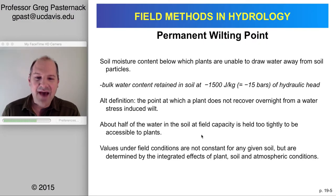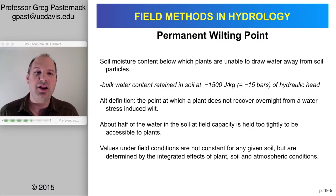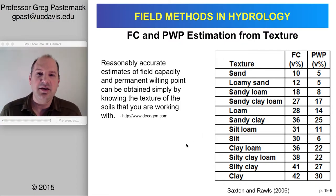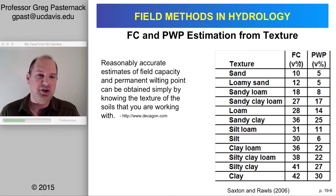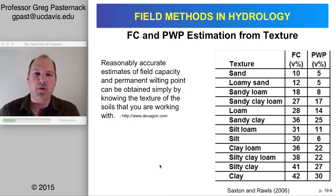About half of the water in the soil at field capacity is held too tightly to be accessible to plants. The permanent wilting point is not easily measured directly, since you'd need something that functions like a plant to compete against the soil. As a result, the permanent wilting point is often estimated based on texture — as is field capacity. Here are typical capacities as volume percent for different soil texture classes that can serve as a first approximation.